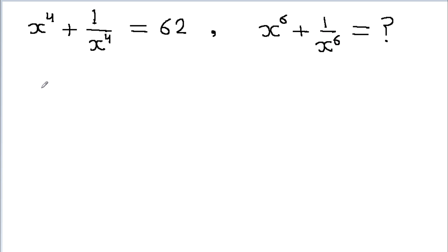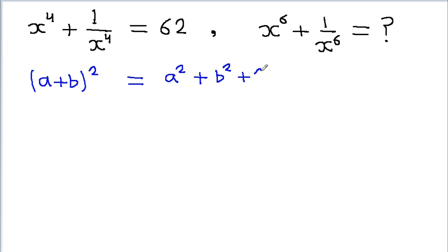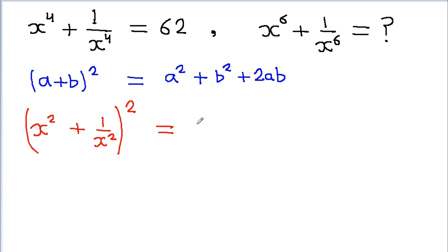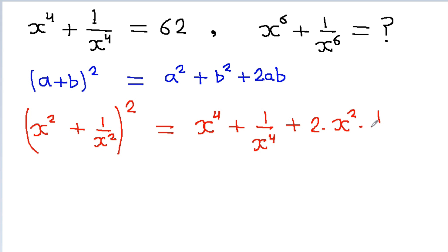We have a formula: (a + b)² is equal to a² plus b² plus 2ab. Using this formula, (x² + 1/x²)² will be equal to x to the power 4 plus 1 by x to the power 4 plus 2 times x² times 1 by x².